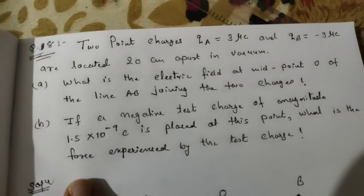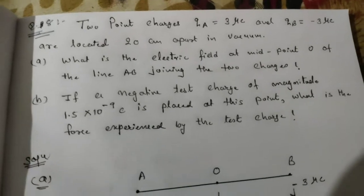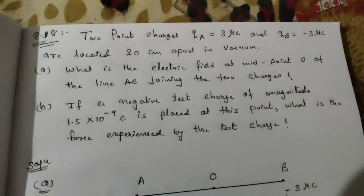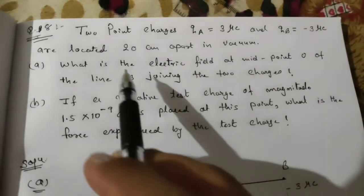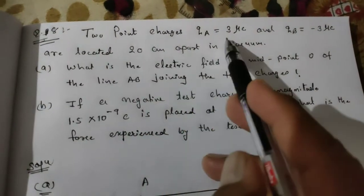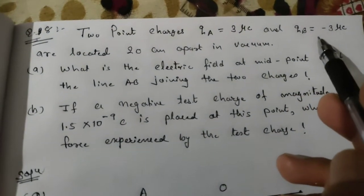Okay, let's see numerical number eight of the first chapter exercise. Two point charges QA = +3 microcoulomb and QB = -3 microcoulomb are located 20 centimeters apart in vacuum.